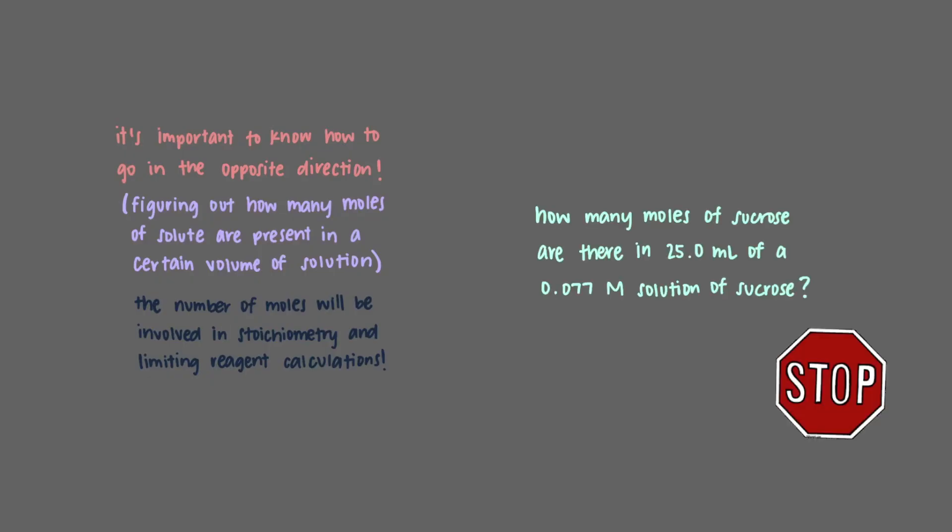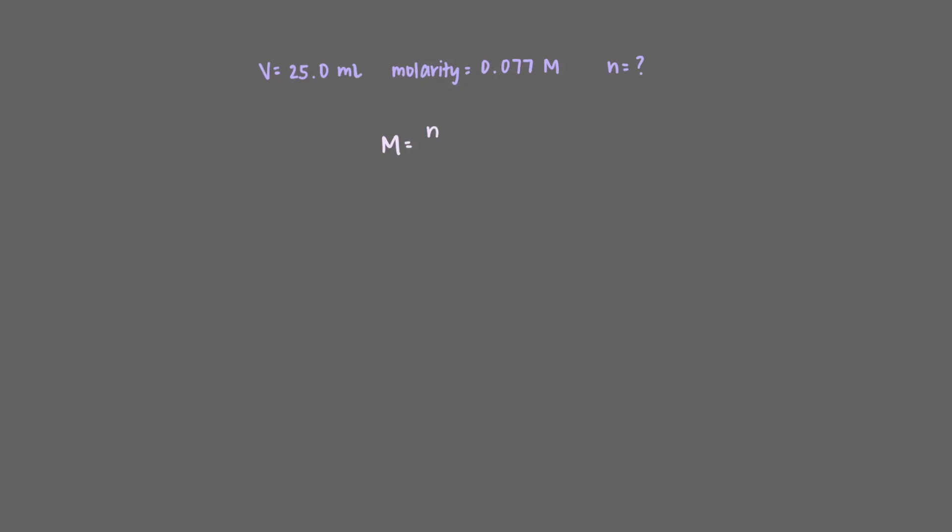How many moles of sucrose are there in 25.0 mL of a 0.077 molar solution of sucrose? To calculate molarity, we divide the number of moles by the volume of the solution. However, in this problem, we already have the molarity and the volume. We want to find the number of moles of sucrose in this solution. We can do so by multiplying the molarity by the volume of the solution. We'll get that there are 0.0019 moles of sucrose in the solution.